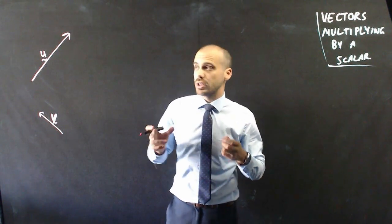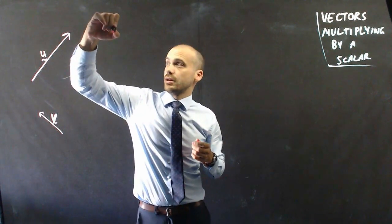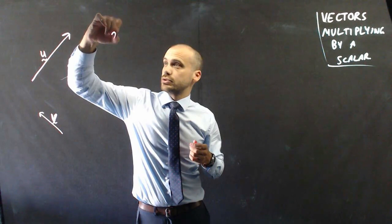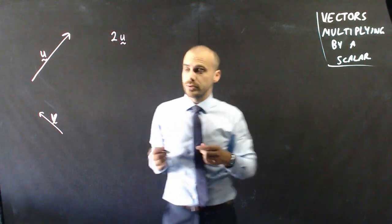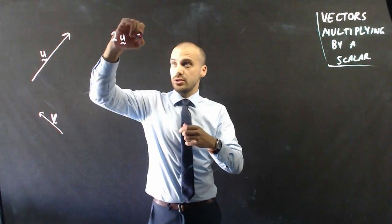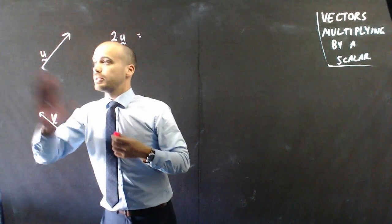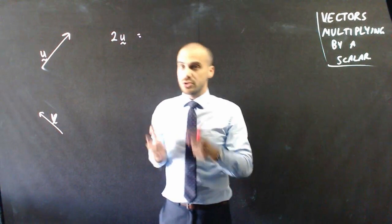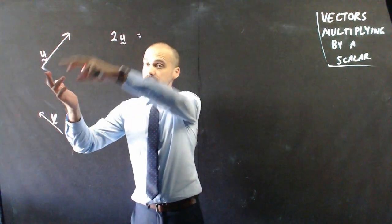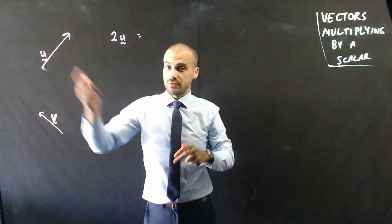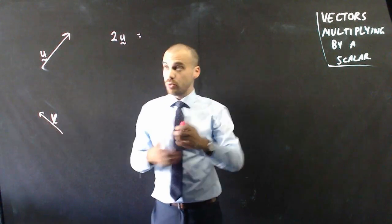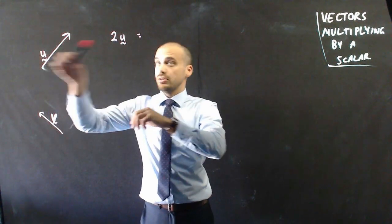What if I wanted to draw a vector 2u? Now vector 2u is just going to be, I might make u a bit shorter, you can probably guess why. Vector 2u is still going to be in the same direction as vector u, but it's going to be twice as long. So it's about that long.